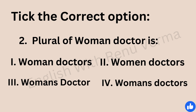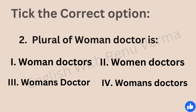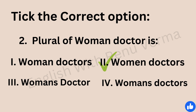The next question is: what is the plural form of 'woman doctor'? The four options are: woman doctors, women doctors, women's doctor, or women's doctors. Here also we have a compound noun — 'woman doctor'. The correct answer is 'women doctors'. We pluralize both nouns: 'woman' becomes 'women' and 'doctor' becomes 'doctors'.